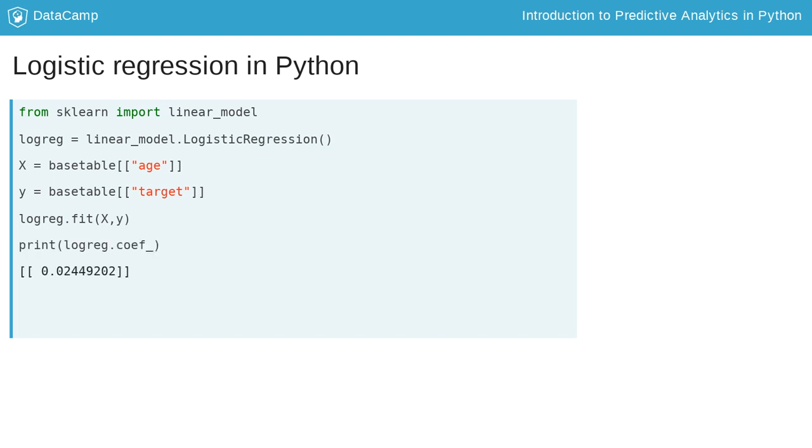After the model is fit, you can observe the coefficient that corresponds with the predictor age by checking the coef value of the fitted model. In this case, the coefficient is positive, namely 0.02, as we expected.